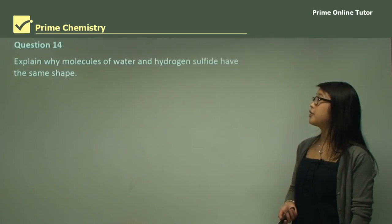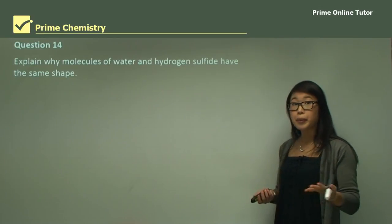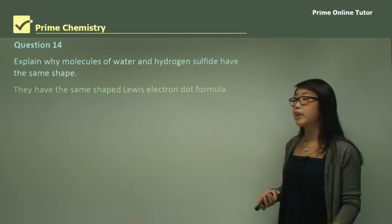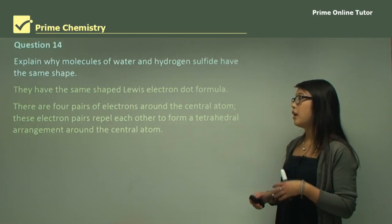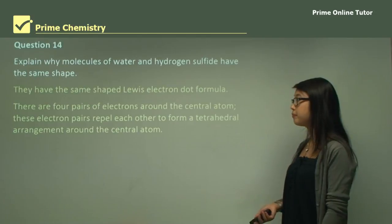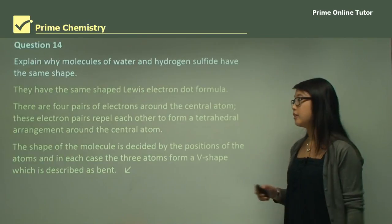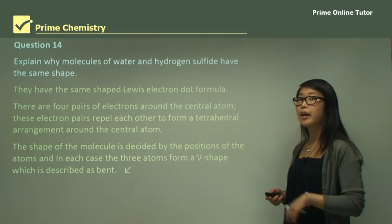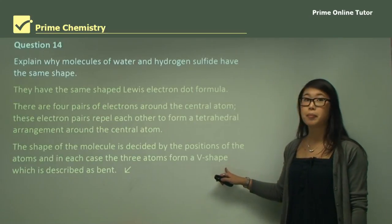Question: Explain why water and hydrogen sulfide have the same shape. We first look at the Lewis dot structure to see if they have lone pairs — in this case, they do. There are four pairs of electrons around the central atom; these electron pairs repel each other and form a tetrahedral arrangement. But the shape of the molecule is decided by the atoms, not the lone pairs. With two bonding atoms and two lone pairs, the lone pairs push the atoms down into a V-shape.